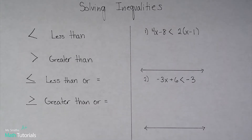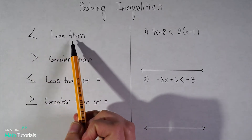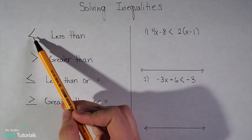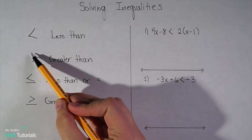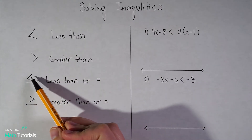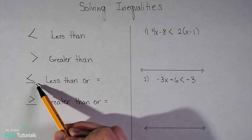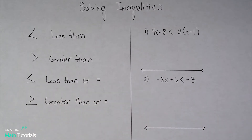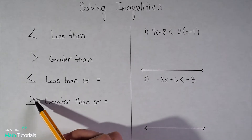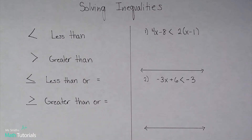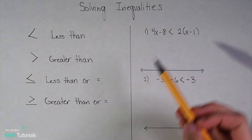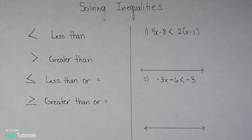In order to solve inequalities, we need to first know the inequality symbols. Less than — I tell students it looks kind of like a slanted L. Greater than. Then you've got less than with a line underneath it, which means less than or equal to — it could be less than or equal to. Same thing with greater than: when you have that line under it, it makes it greater than or equal to. You've got to have these down before you can really dive in with solving inequalities.